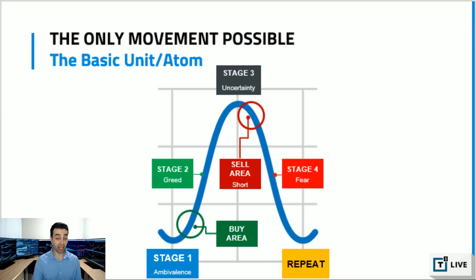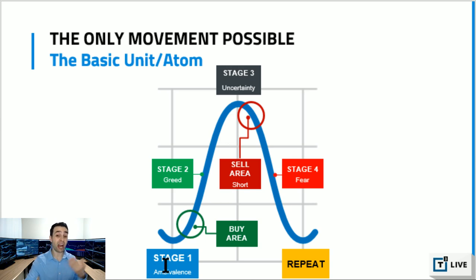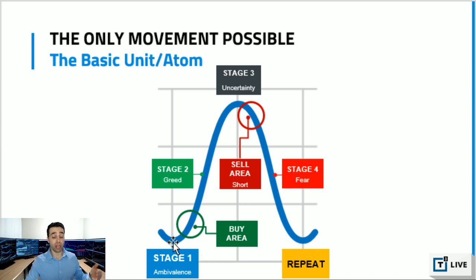First, you have to understand there's only one movement that all stocks or the market can make — there is no other movement possible. This movement is called the basic unit or the atom, and it consists of four stages. Stage one is dominated by ambivalence; traders are basically not interested in the stock because they got hurt the last time they played it. That's why eventually stage one always either breaks out or continues lower.